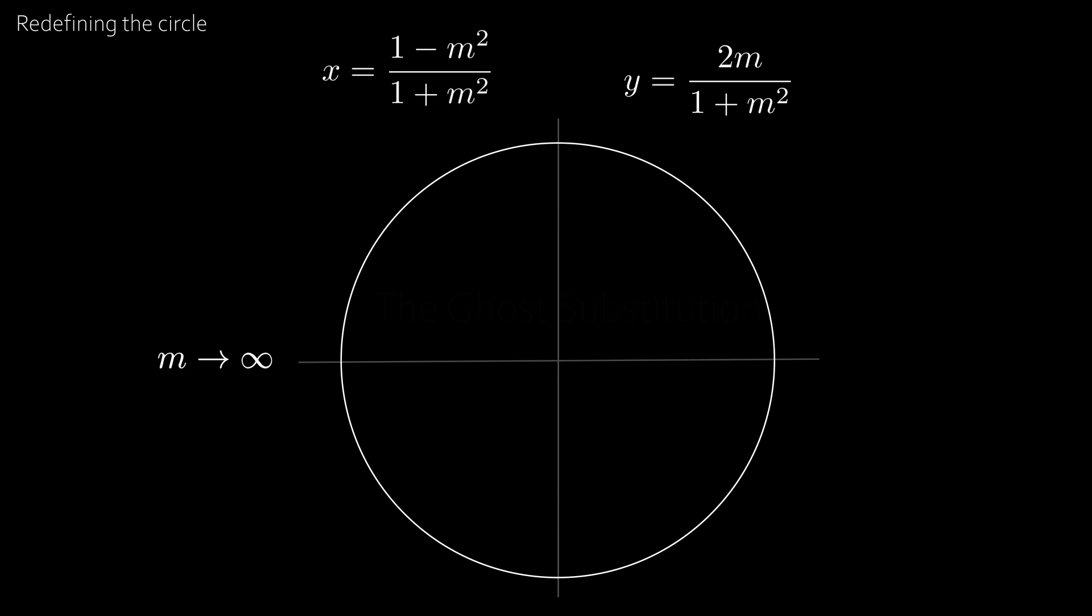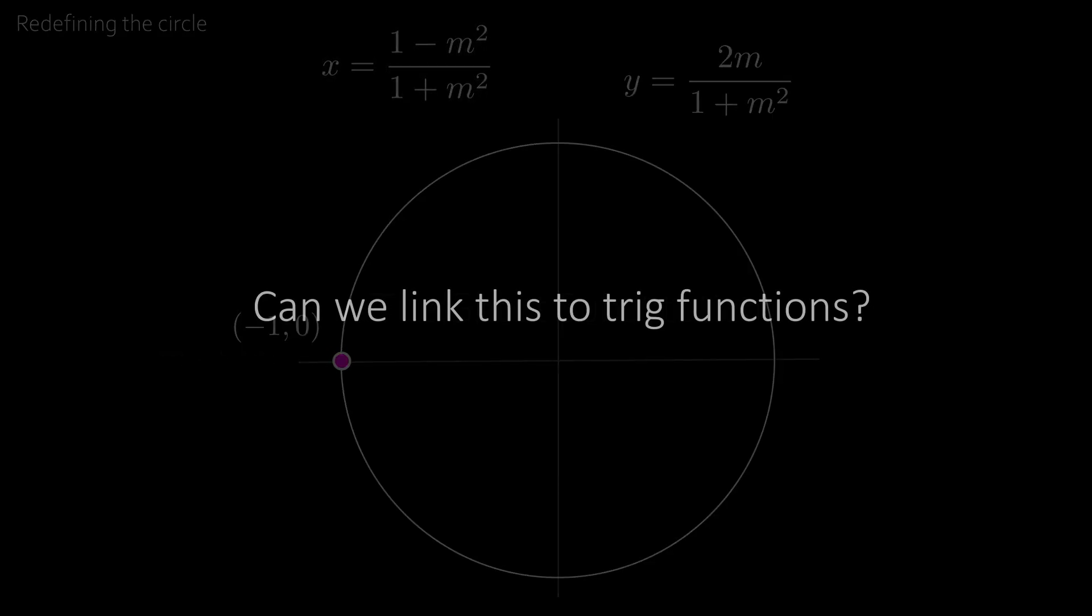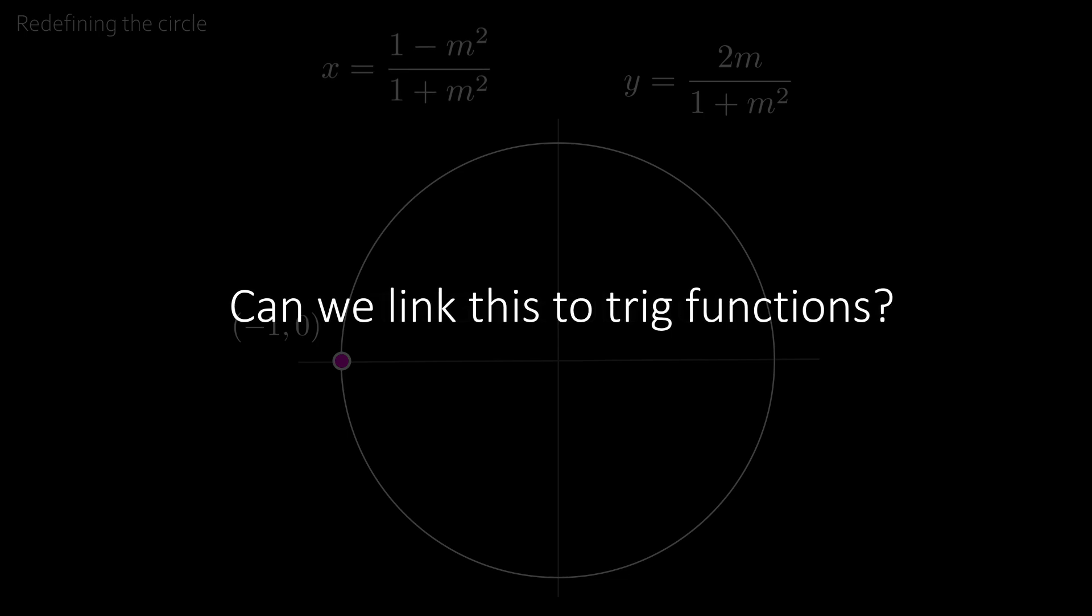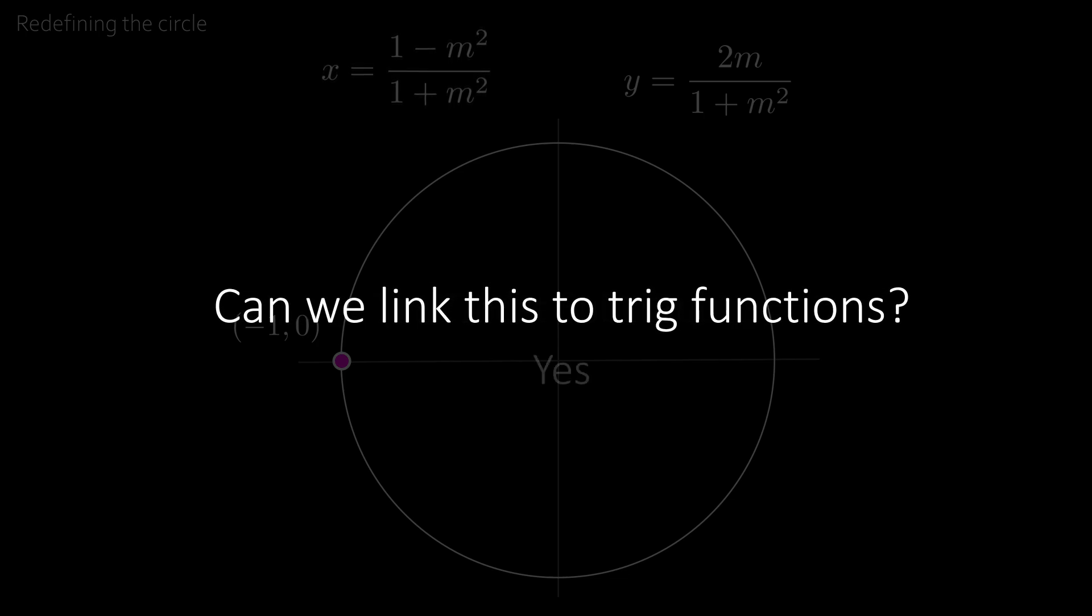and when m approaches infinity, we get the coordinate minus 1, 0. Now can we link this back to sine and cosine, since sine and cosine also define the circle? And the answer is yes we can.